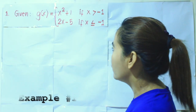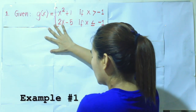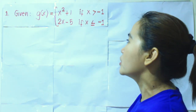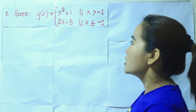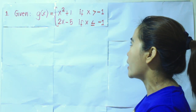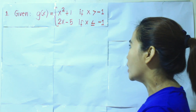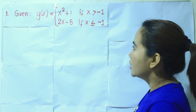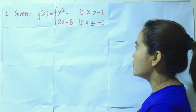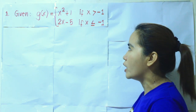So how are we going to evaluate a piecewise function? For example, g of x is equal to x squared plus 1 if x is greater than negative 1, and 2x minus 5 if x is less than or equal to negative 1.